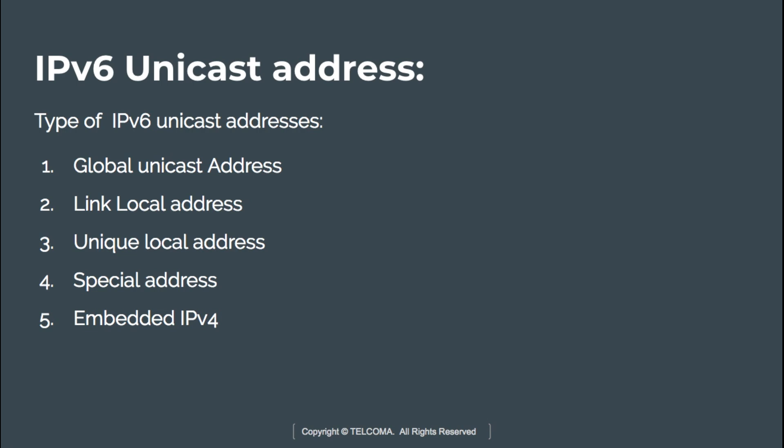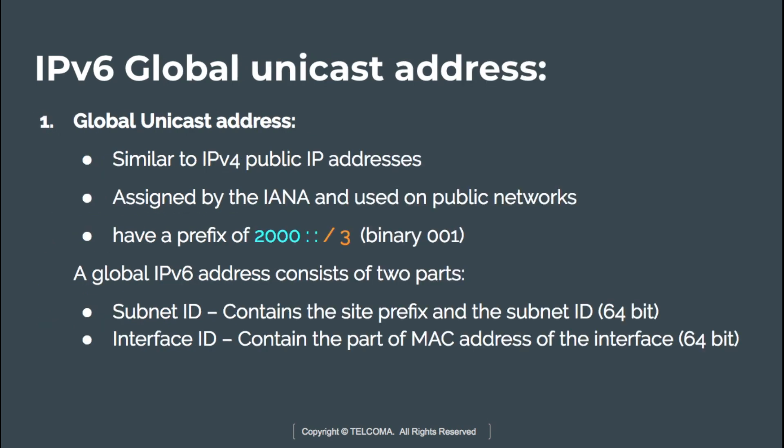The first type is the global unicast address. IPv6 global unicast addresses are similar to IPv4 public IP addresses. Just as IPv4 public addresses are assigned by IANA, these global unicast addresses are also assigned by IANA and used on public networks. The global unicast address has a prefix of 2000:: with a prefix notation of /3, and its binary representation is 001.